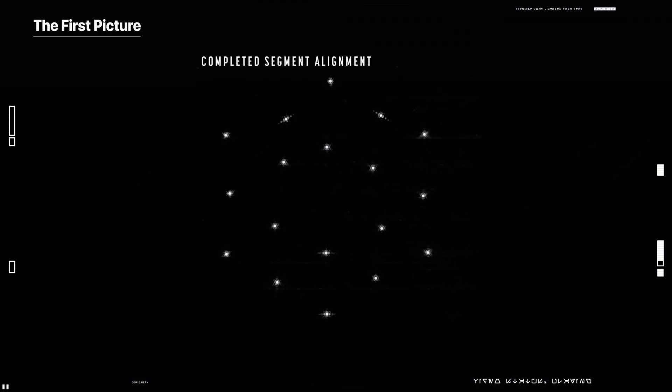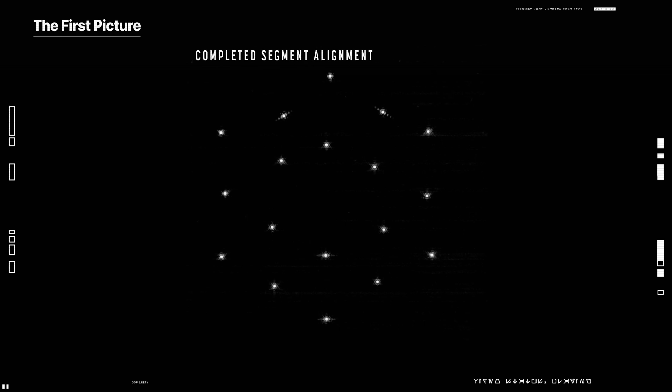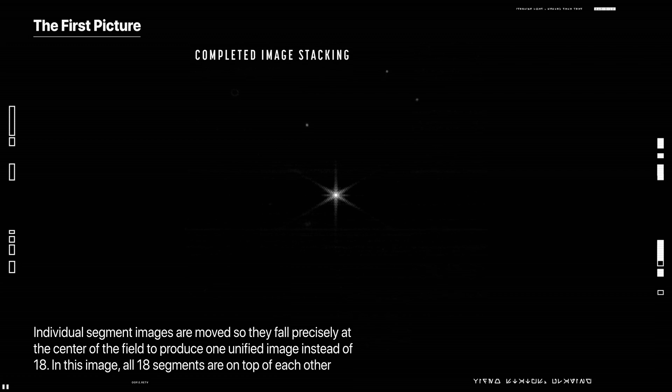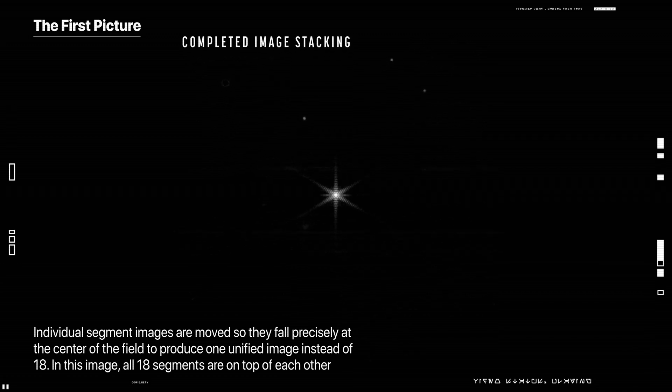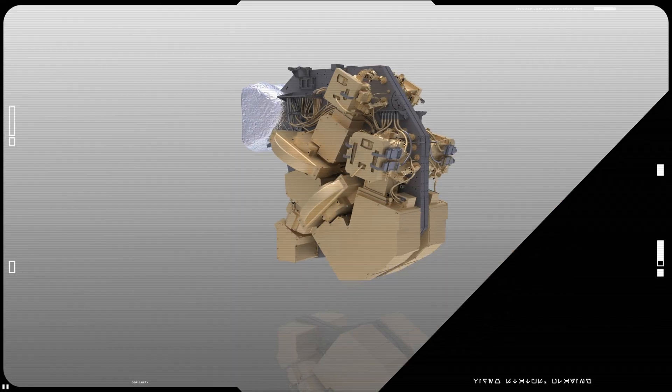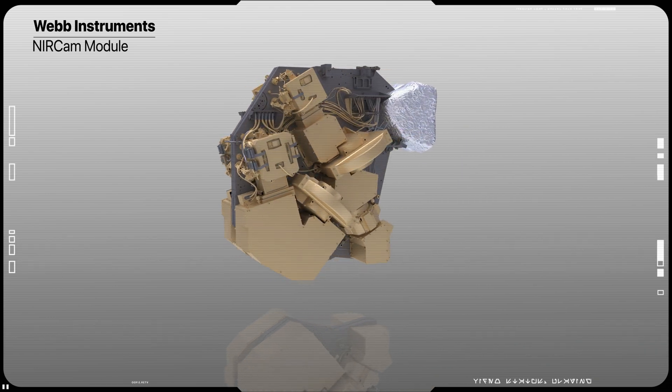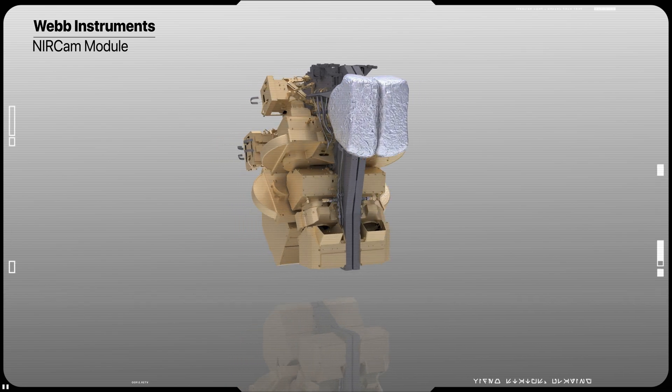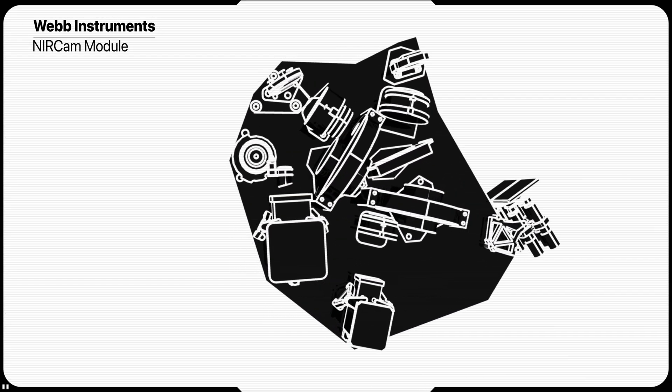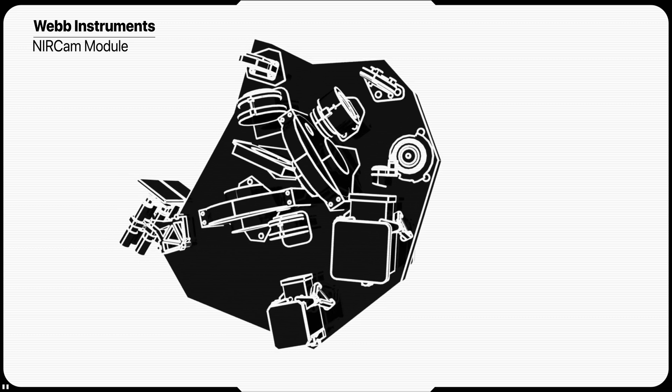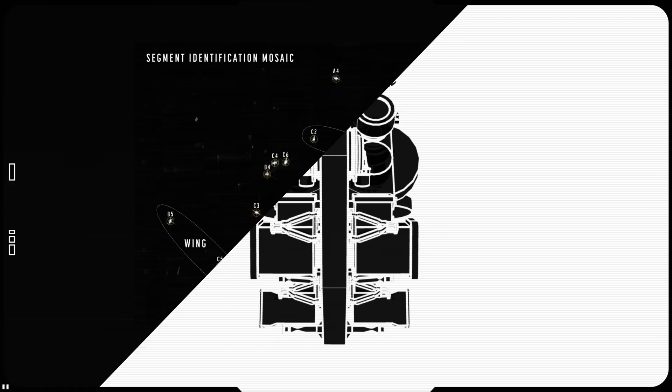These images were then stitched together to produce a single large mosaic that captured the signature of each primary mirror segment in one frame. The images shown here are only center portion, an enormous image with over 2 billion pixels. Webb's engineers needed to confirm that near infrared camera, NIR cam, was ready to collect the first light from celestial objects and then identify starlight from the same star in each of the 18 primary mirror segments.